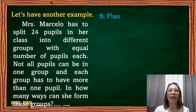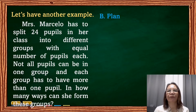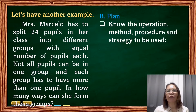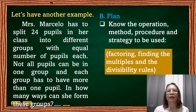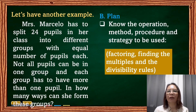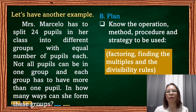After understanding the problem, we proceed to planning. We need to know what operations, methods, procedures, and strategies to use. In our problem, we need to find the factors of 24. We can also use multiples of 24 and the divisibility rules.